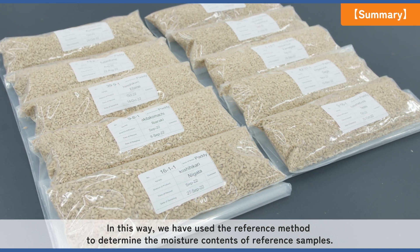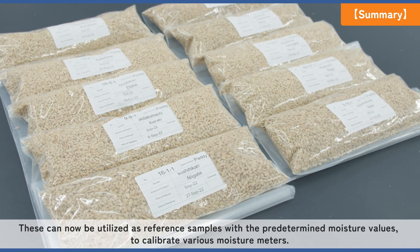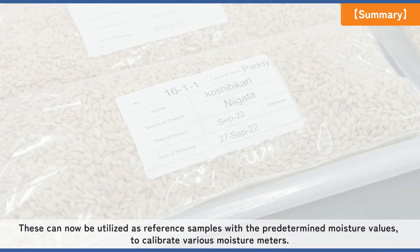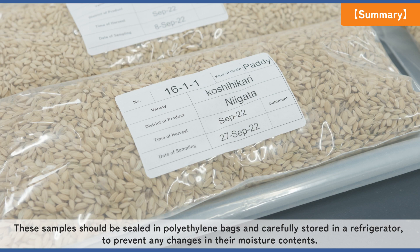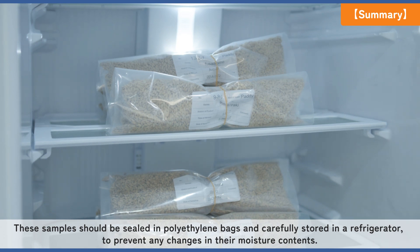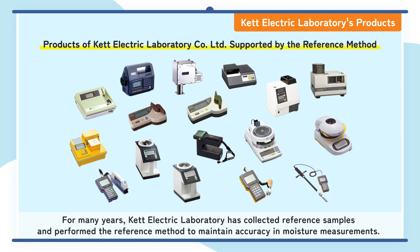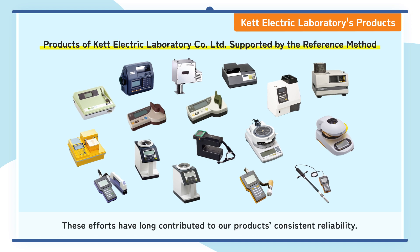In this way, we have used the reference method to determine the moisture contents of reference samples. These can now be utilized as reference samples with the predetermined moisture values to calibrate various moisture meters. These samples should be sealed in polyethylene bags and carefully stored in a refrigerator to prevent any changes in their moisture contents. The traceability system established through this reference method plays an important role in maintaining the accuracy and reliability of moisture meters. For many years, Kett Electric Laboratory has collected reference samples and performed the reference method to maintain accuracy in moisture measurements, and these efforts have long contributed to our product's consistent reliability.